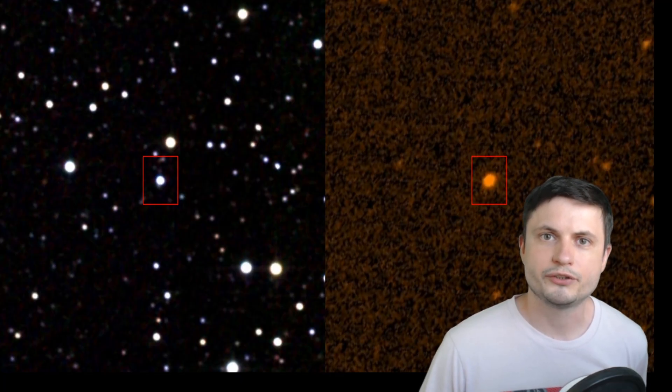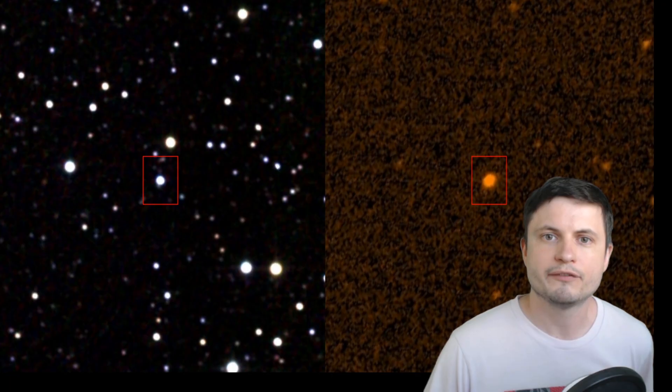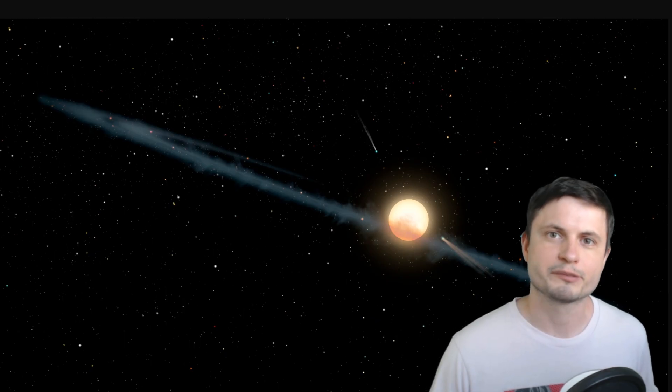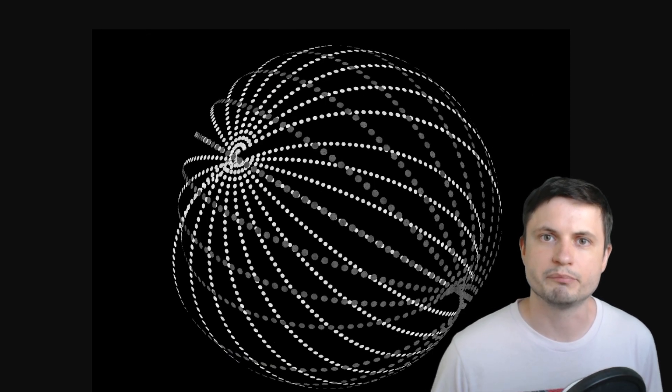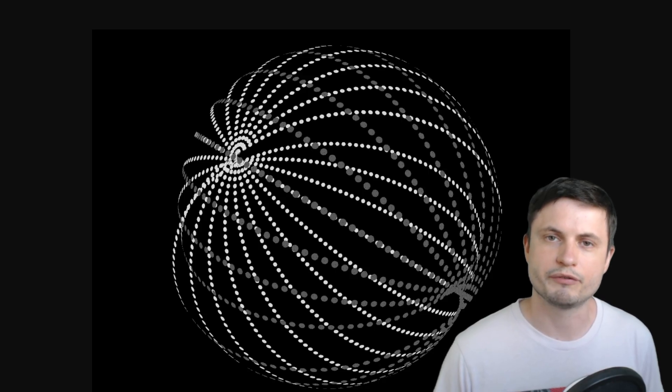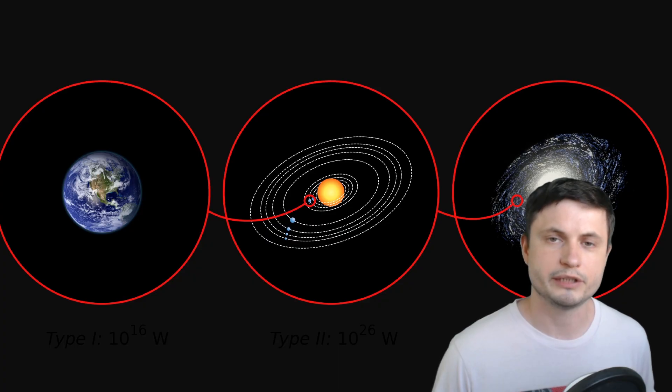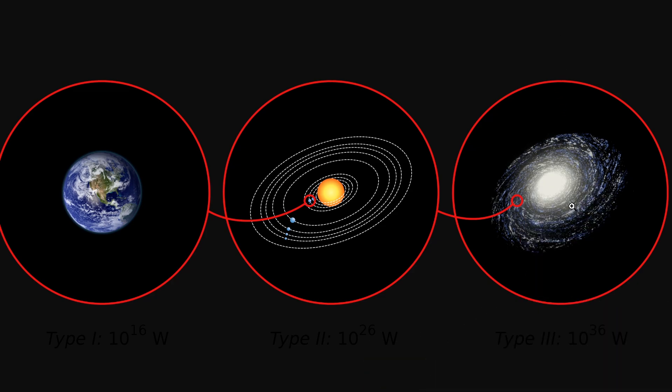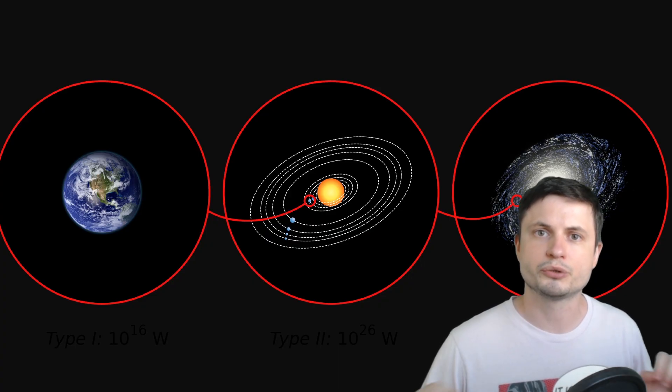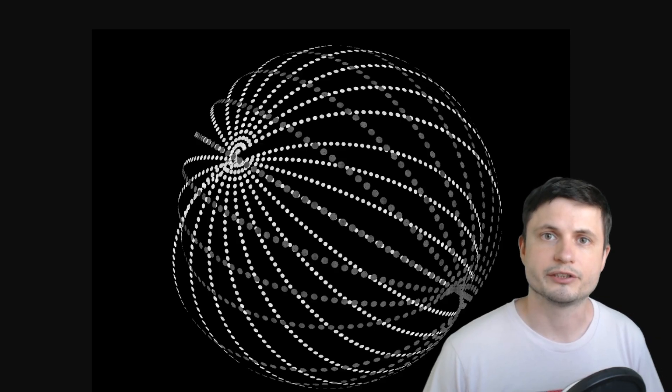You might already know the story of the so-called Tabby star, also known as KIC 8462852. This particular star was exhibiting unusual dimming patterns, and one of the more dramatic explanations of this was that maybe an alien civilization built a Dyson sphere around it, and we were just observing the patterns of the Dyson rings passing in front of the star. But since then, we were also able to explain all of this naturally. So, these so-called type 2 civilizations should not really be that difficult to see, because of all of these mega projects they would be sort of creating around the galaxy.